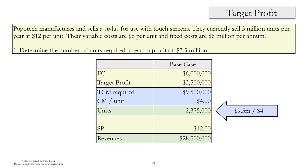If we wanted that in terms of revenues, we would take that number and multiply it by the sales price per unit of $12, which gives us the total revenues required to earn a target profit of $3.5 million.